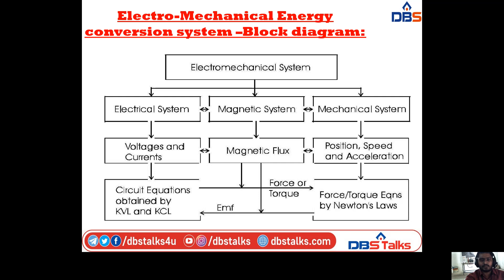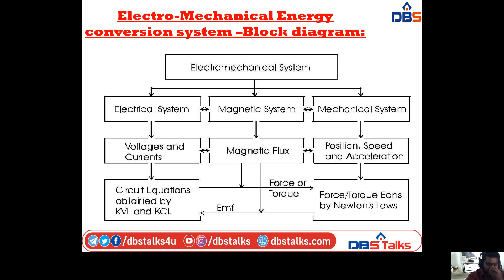Coming to the block diagram of the electromechanical energy conversion system — this is the hierarchy of the electromechanical system. It consists of an electrical system, a mechanical system, and a magnetic system. In the electrical system we have voltages and currents; in the mechanical system we have speed, acceleration, and position. In the magnetic system we have magnetic flux. For voltages and currents, we have circuit equations obtained by KVL and KCL — Kirchhoff's voltage law and Kirchhoff's current law.